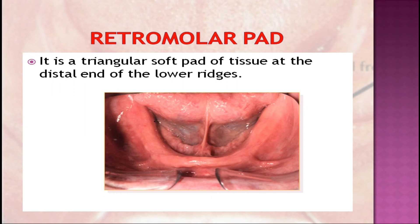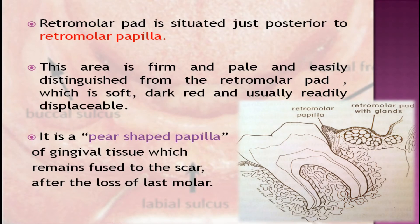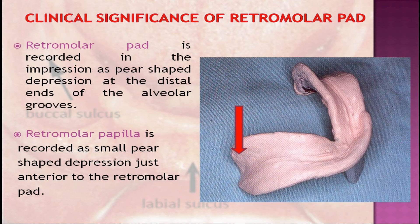Extension of the lingual flange under the mylohyoid ridge cannot be tolerated as it interferes with the function of the muscle. The retromolar pad is situated just posterior to the retromolar papilla. The retromolar papilla is a pear-shaped papilla of gingival tissue which remains fused to the scar after the loss of the last molar. This area is firm and pale, easily distinguished from the retromolar pad which is soft, dark red, and usually readily displaceable. The retromolar pad is recorded in the impression as a pear-shaped depression at the distal ends of the alveolar grooves.